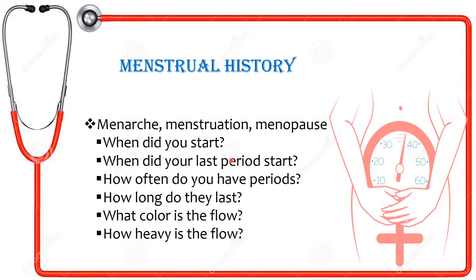It is important to note the menarche or menopause. You can utilize the OLD CART framework — when did you start having menstruation or menopause, when did your last period start, how often do you have periods, how long does it last, what color is the flow — is it bright red or dark red? How heavy is the flow? To check this, you can ask the client how many pads she is using in a day and how often she changes them.